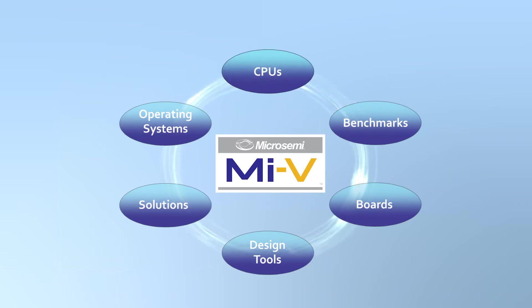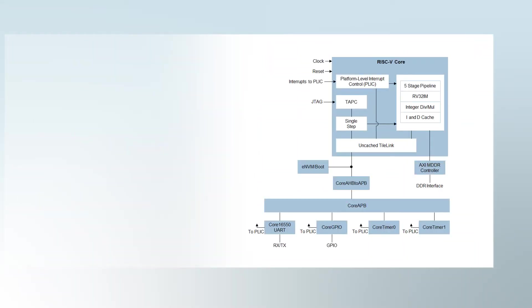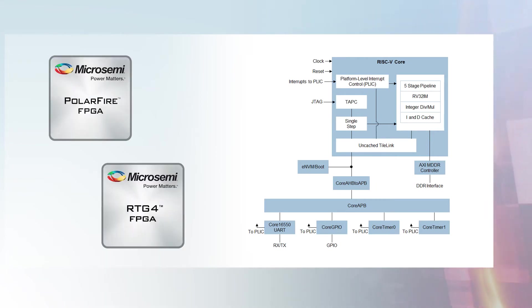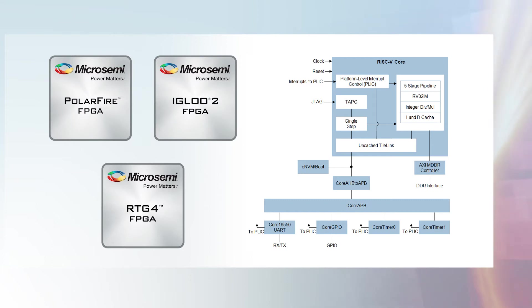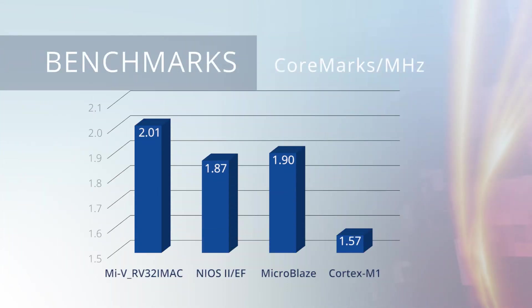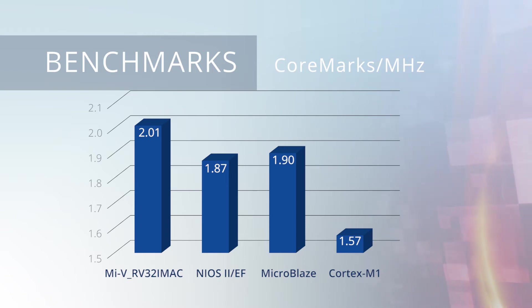First, CPUs. MicroSemi has developed several soft Mi5 RISC-V cores that can be used in our RTG-4, PolarFire, and Igloo 2 FPGAs. Benchmarks are just that — what is the expected performance for each RISC-V core in each supported family?